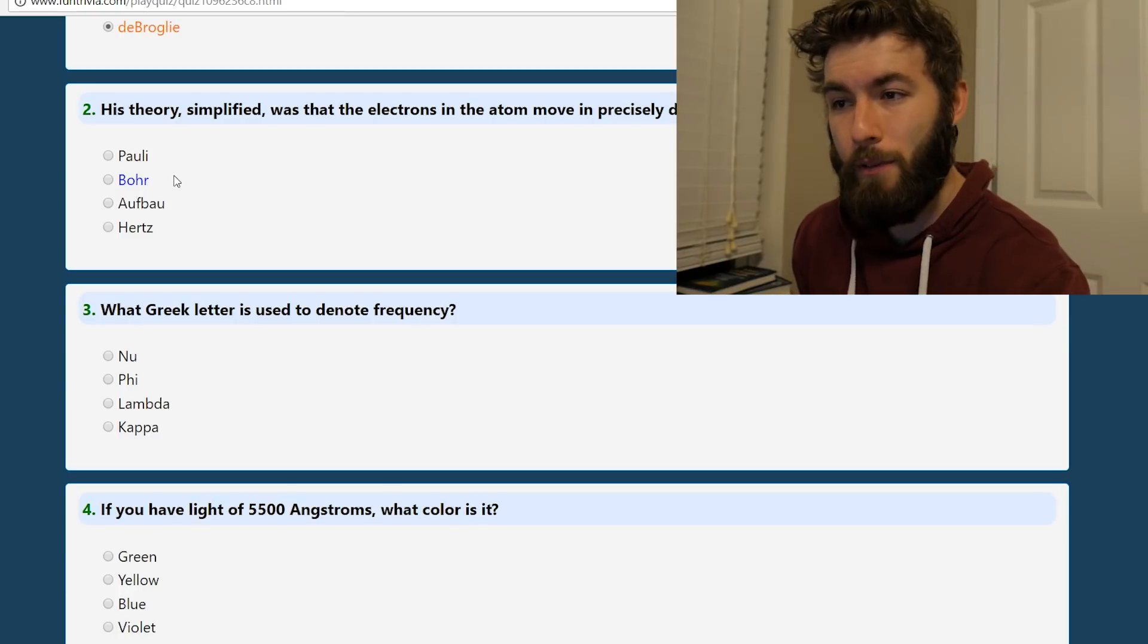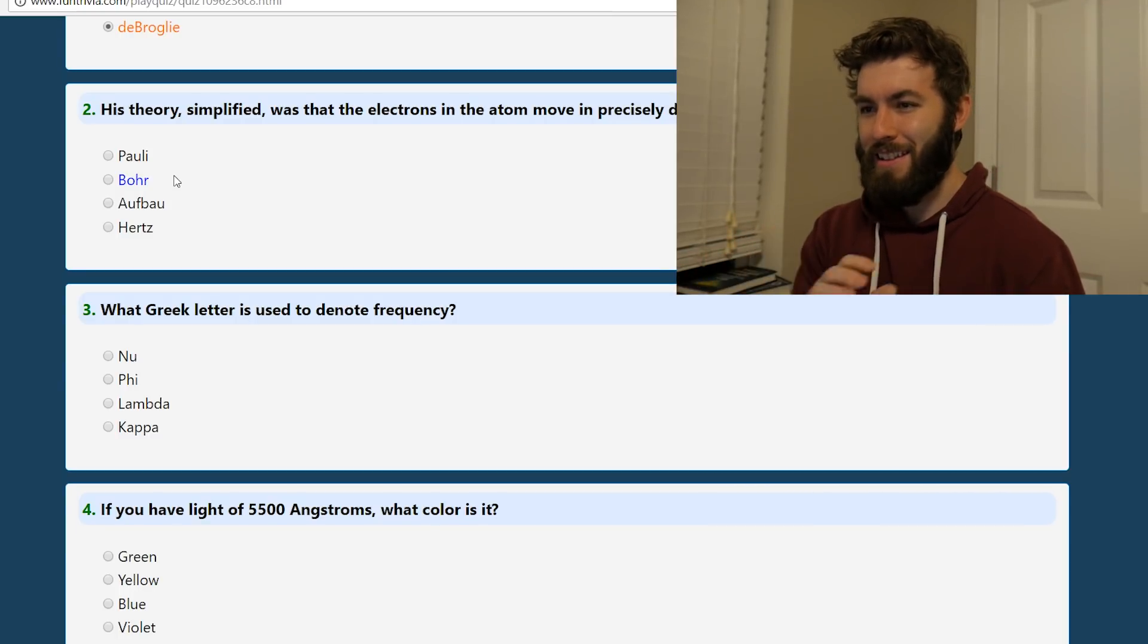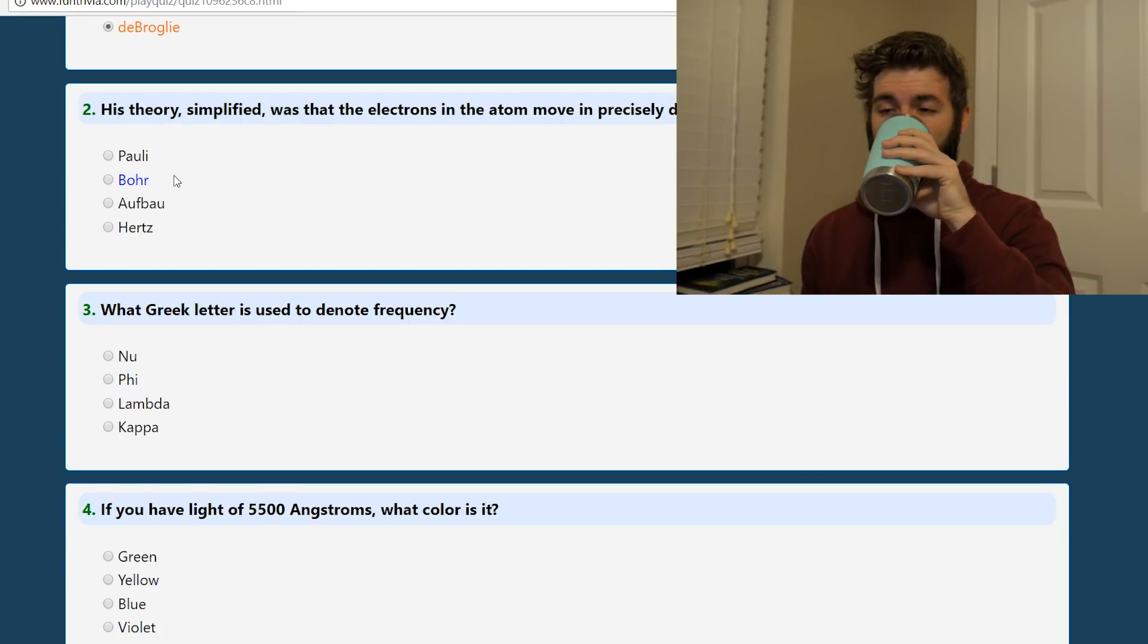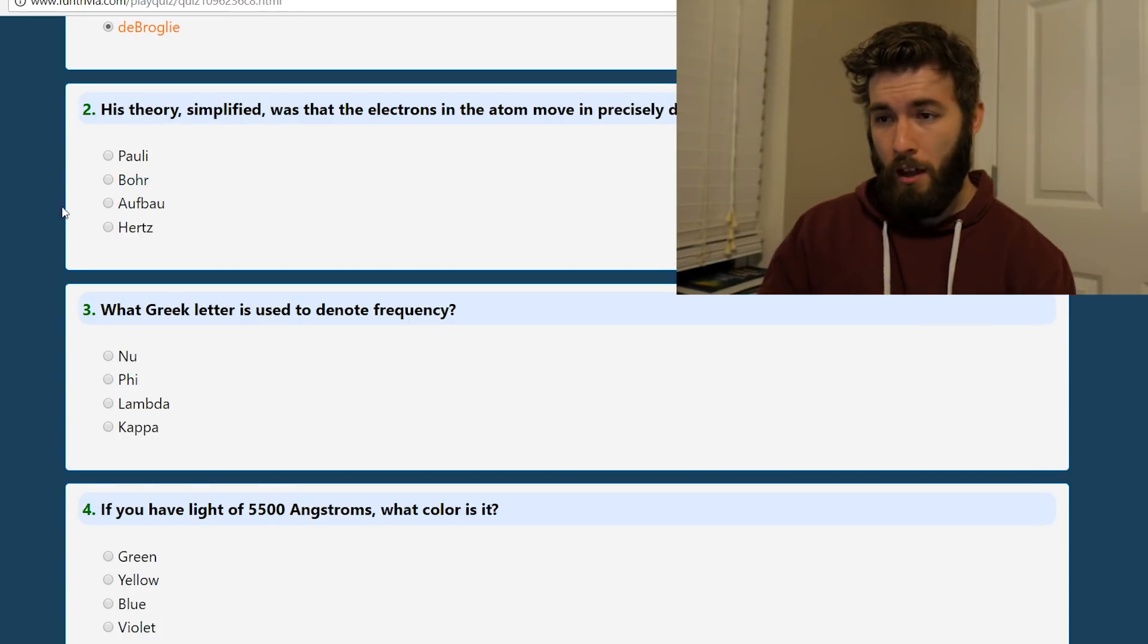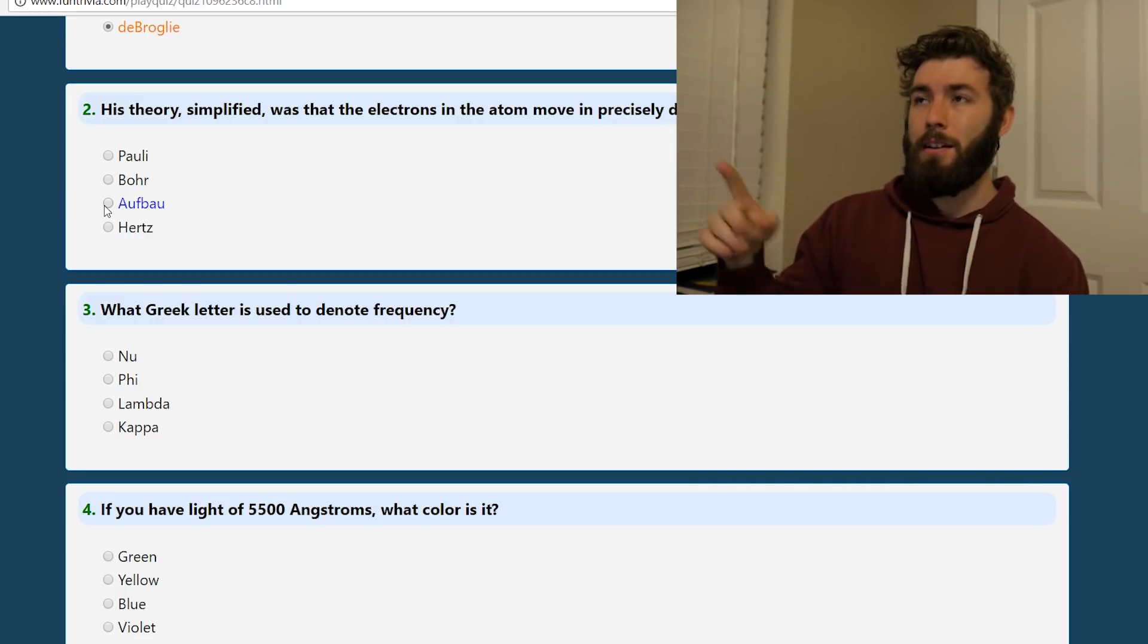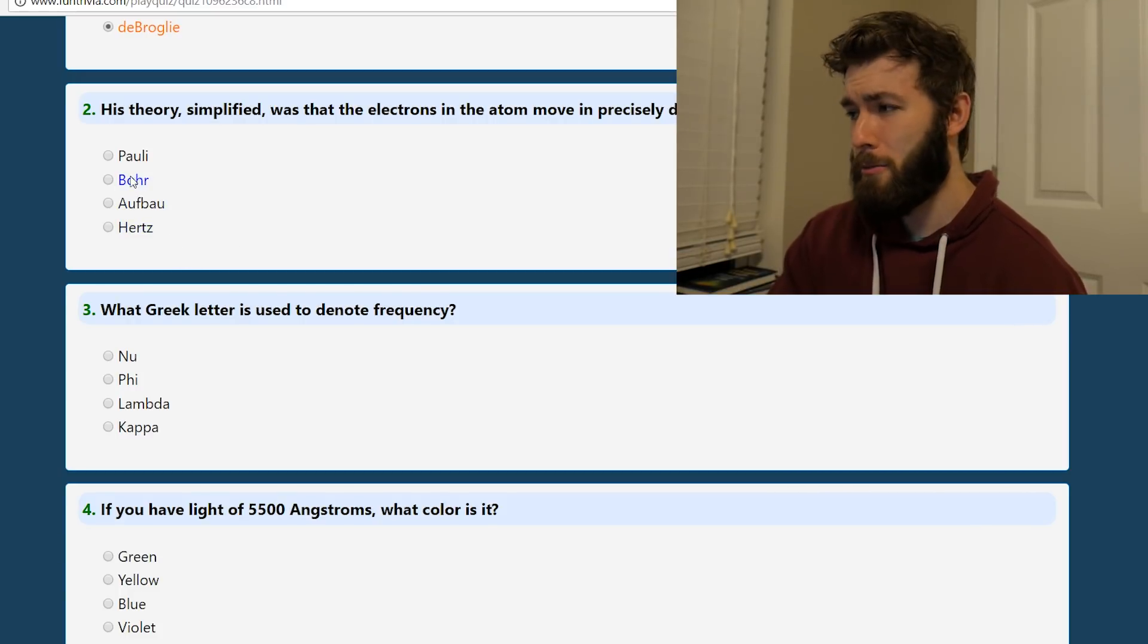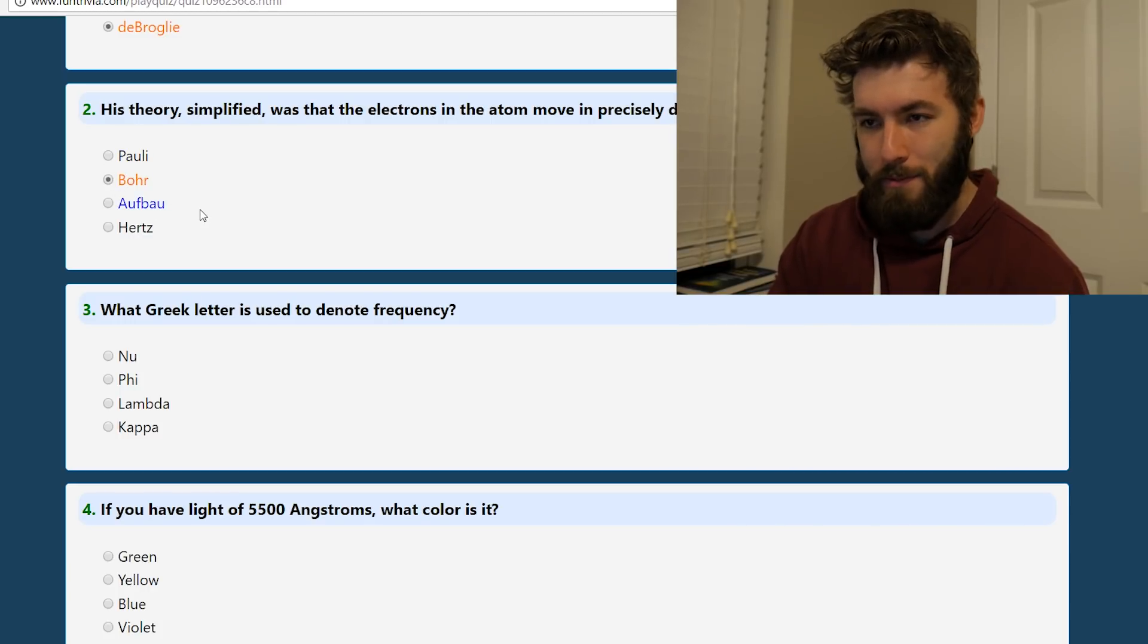His theory simplified was that the electrons in the atom move in precisely determined orbits. Aufbau. Aufbau is that way of short-cutting electron configuration. Hertz, founder of donuts. Hertz, donut. That was terrible. Bohr. It's Bohr. Well, yeah, it's Bohr.